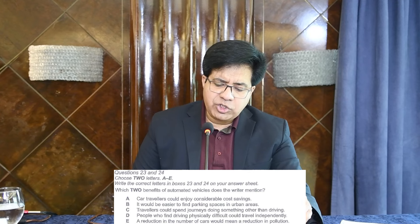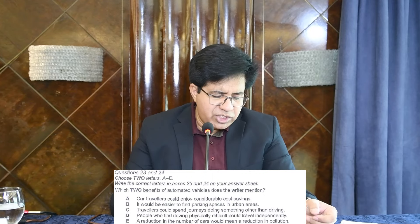Now after this we come to questions 23 and 24: 'Which two benefits of automated vehicles does the writer mention?' We need to find a paragraph where they talk about benefits. Usually these answers are in one paragraph, sometimes two. Come to the passage and look at paragraph B.